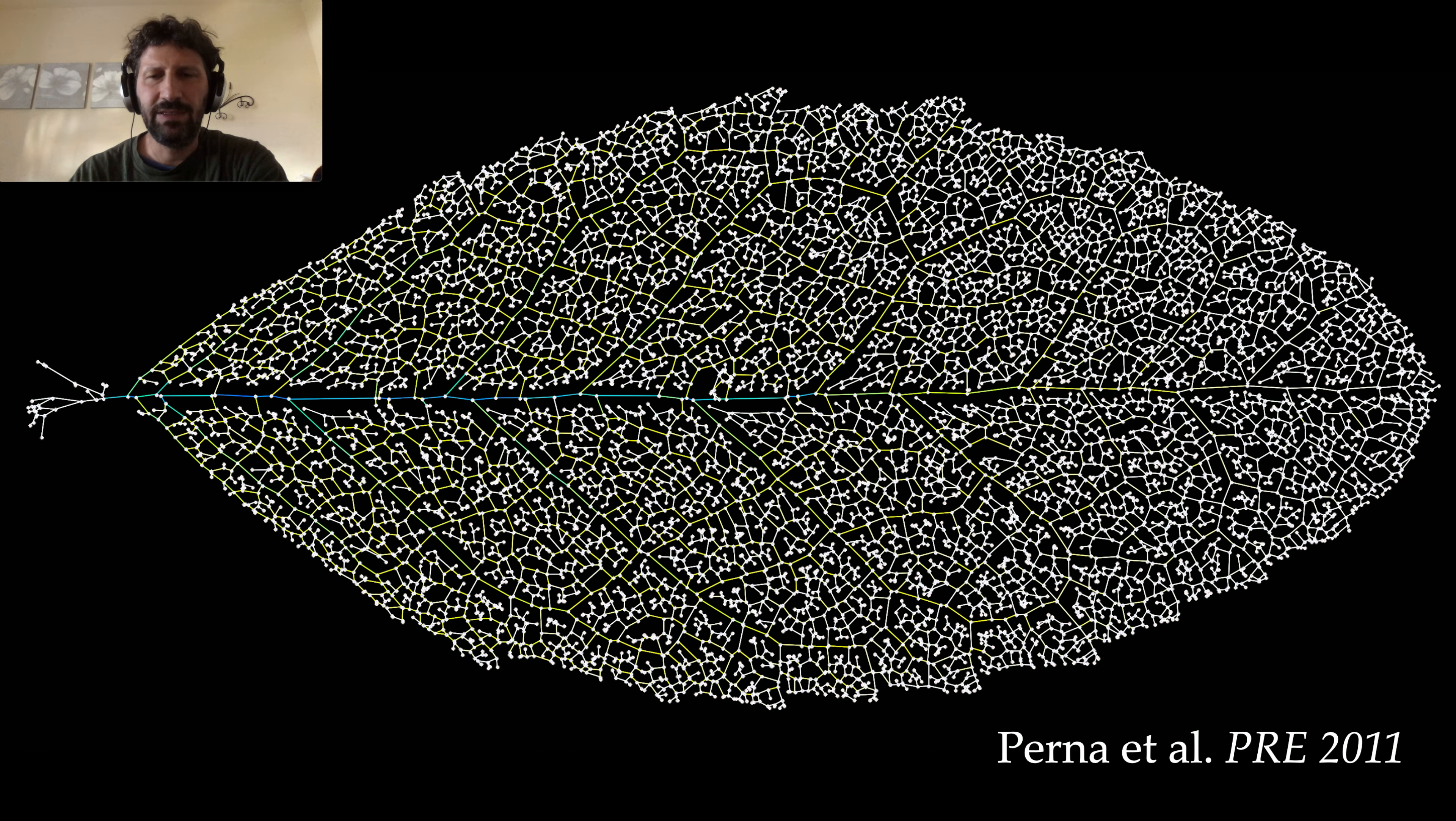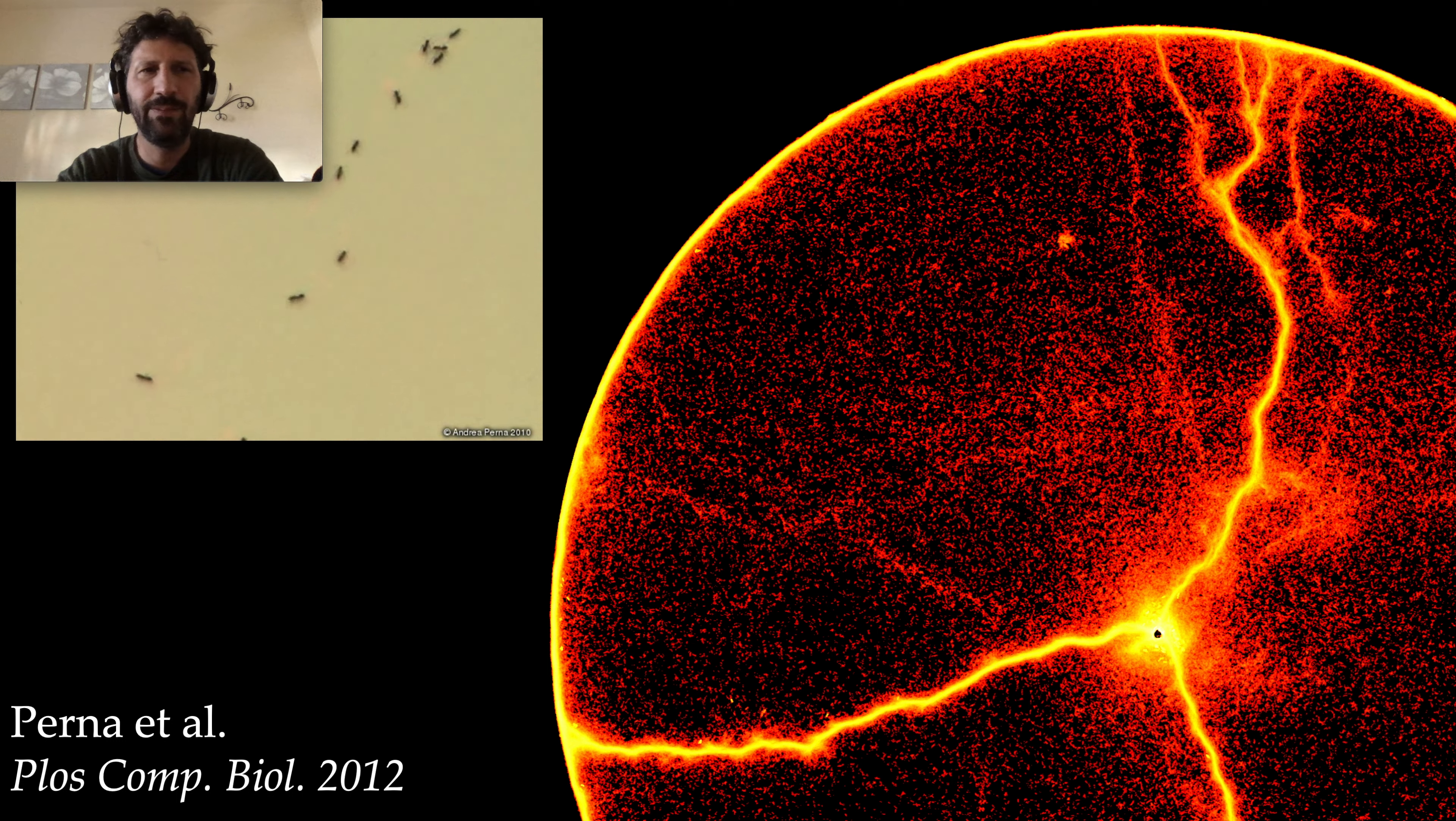Another example of pattern formation is trail formation by ants. We can try to understand the pattern phenomenon in terms of mechanisms: each ant moves around performing a random walk and leaves tiny drops of pheromone wherever they go. But in turn, ants are attracted by the pheromone left by other individuals, so there is a positive feedback mechanism.